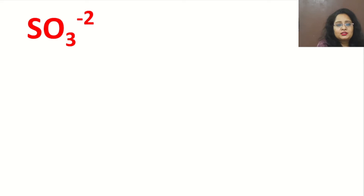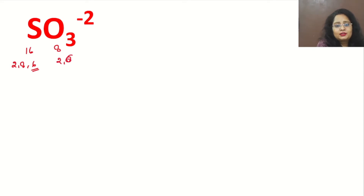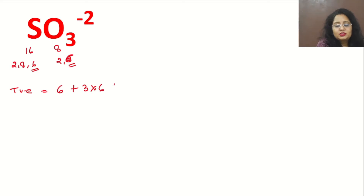Sulfite ion contains sulfur and oxygen. Sulfur's atomic number is 16, so its valence electrons are 6. Oxygen's atomic number is 8, so its valence electrons are also 6. To calculate total valence electrons: sulfur contributes 6, three oxygen atoms contribute 3×6=18, and the 2− charge adds 2 more electrons. So total valence electrons = 6 + 18 + 2 = 26.